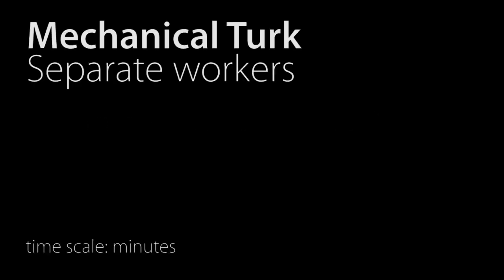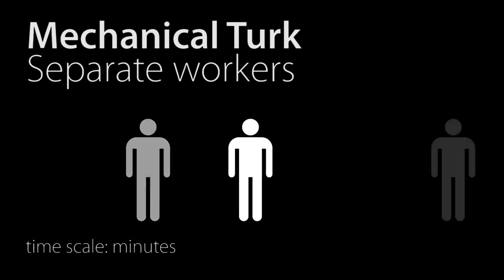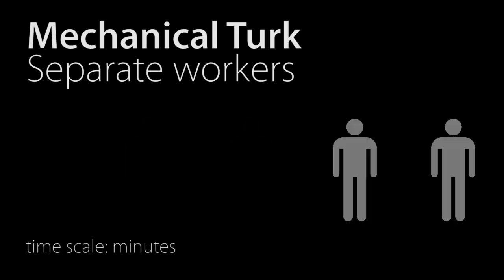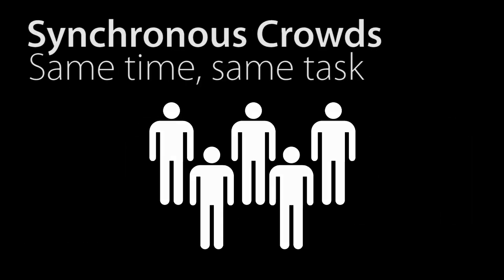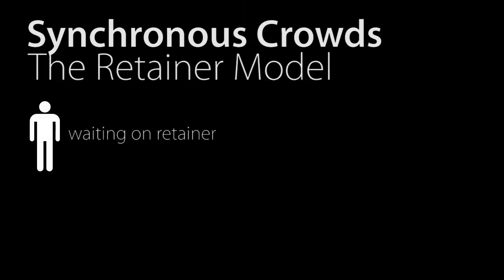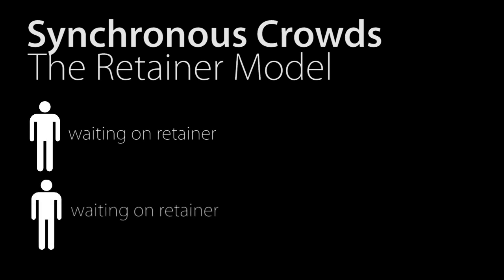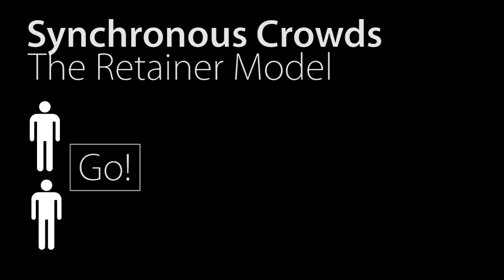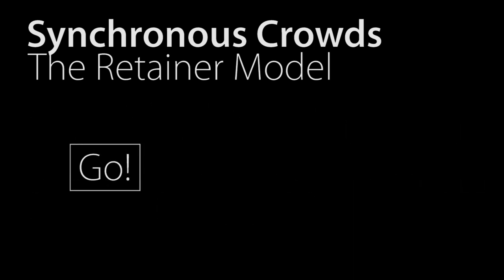Instead of approaches where workers come and go over a series of minutes, we've developed techniques for synchronous crowds — crowds of 5 to 10 people working simultaneously. To recruit synchronous crowds, we use retainers. Workers are paid a bit to wait, and then when work is ready, they all respond quickly and start working at the same time.